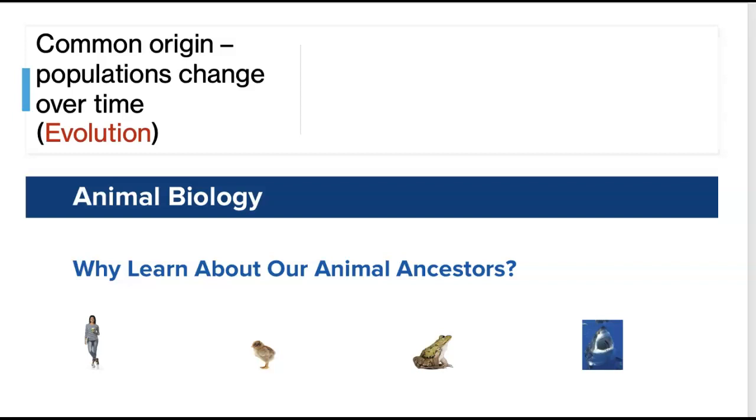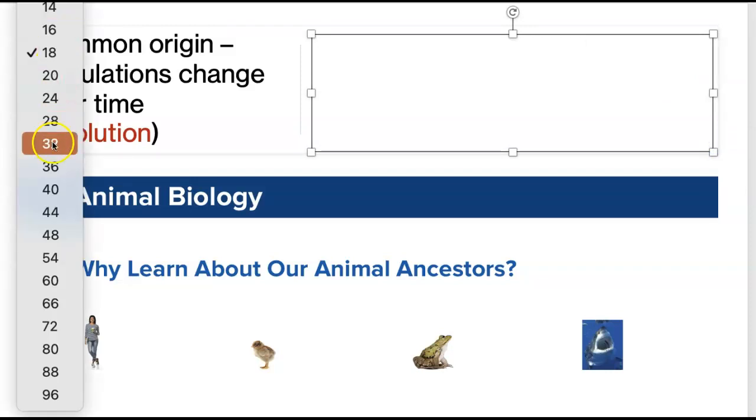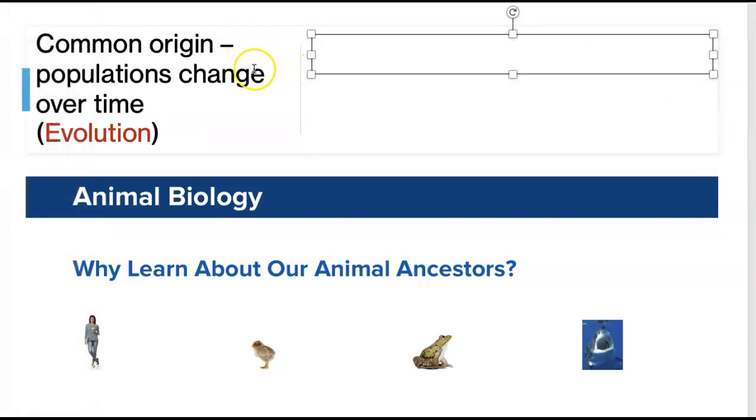So when we look at animal evolution and the ancestral history, there was this original animal population that over time gave rise to all these other groups out there. That's the process again of evolution. Now, what causes a lot of this? This is what was discovered by Mr. Charles Darwin.